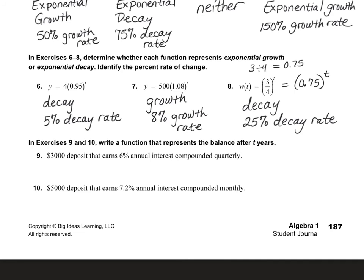In exercises nine and 10, we want to write a function that represents the balance after t years. This is going to be using the compound interest formula that I gave you on the previous page. So here's my formula. Remember, P stands for principal. That's how much you start with. R is the rate that it's being compounded. N is how many times per year it's being compounded. And t is the number of years.